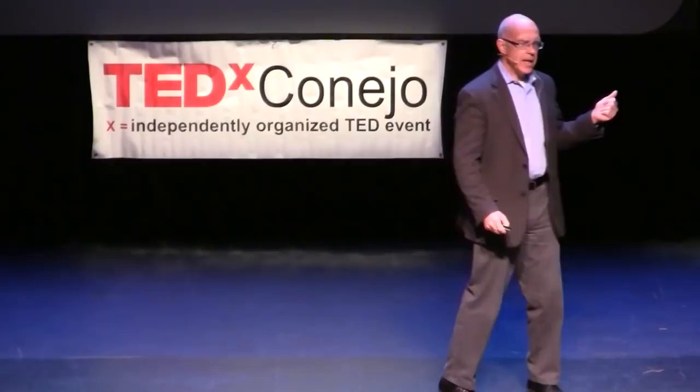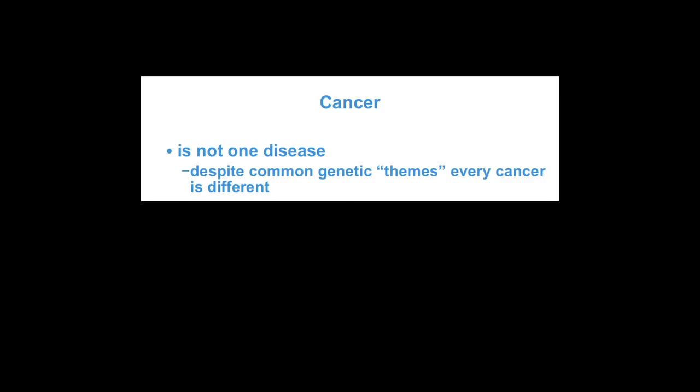The first thing I want to tell you is cancer is not one disease. Just as everyone has a unique thumbprint — when you look at it superficially, they all look the same, but the closer and closer you get to it, they're actually all different. The same is true for every breast cancer, for every colon cancer. It's actually completely different, even though there are what I've referred to on this slide as common genetic themes.